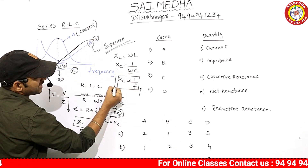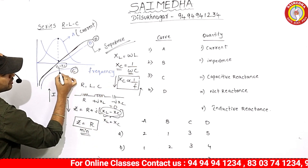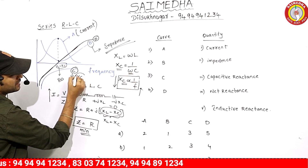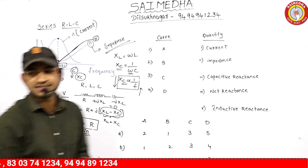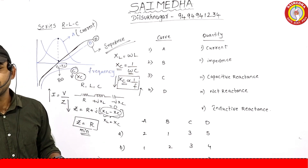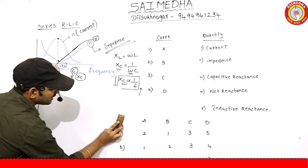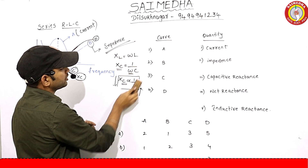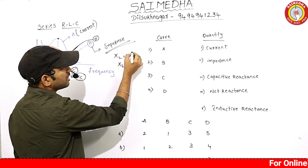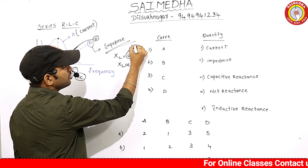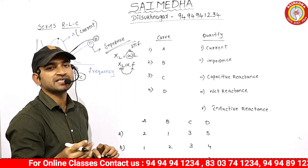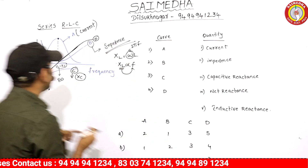When frequency increases, capacitive reactance value decreases. The curve for capacitive reactance forms a rectangular hyperbola. For inductive reactance, XL equals omega L, so XL is directly proportional to frequency. When frequency increases, inductive reactance value also increases.